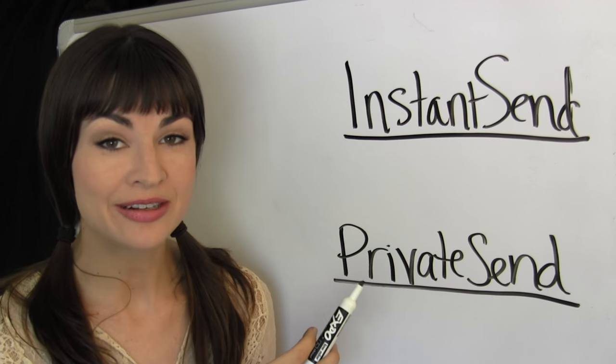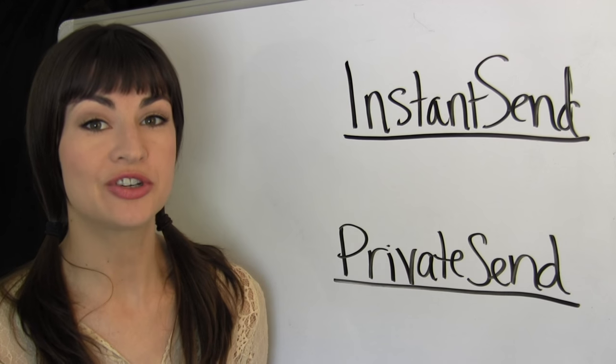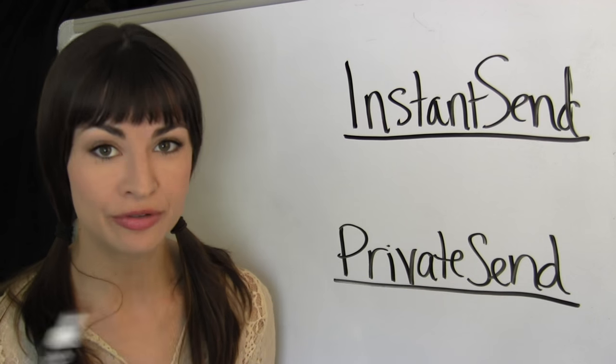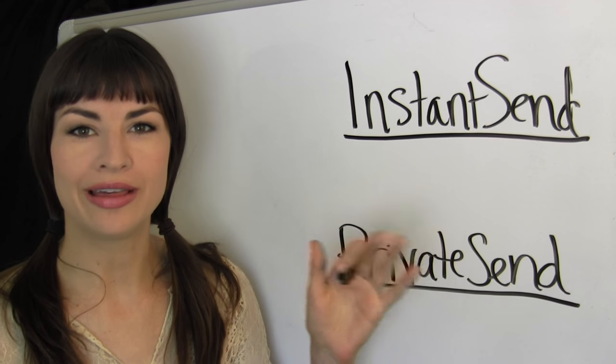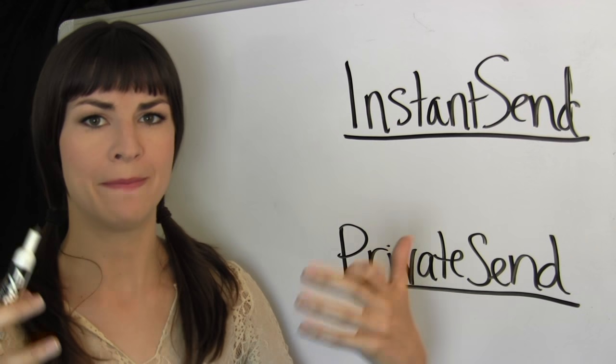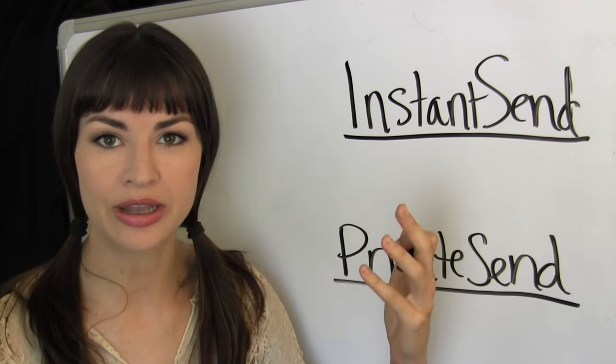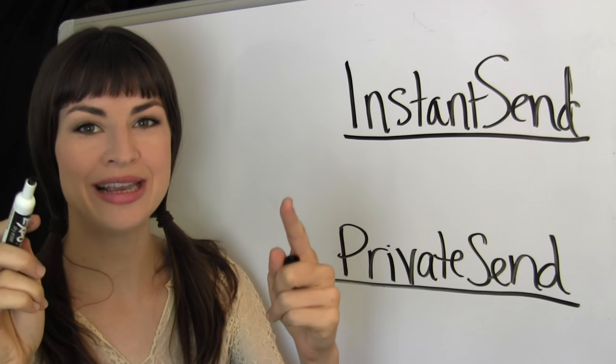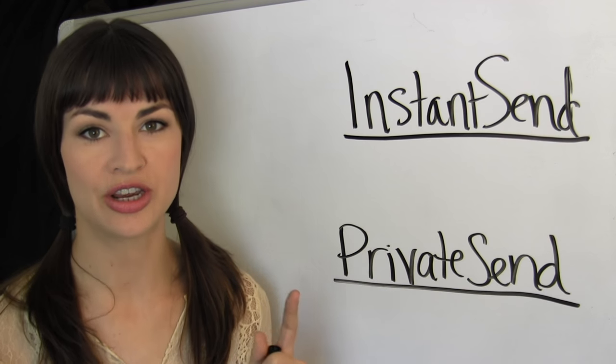Instant send and private send are two functionalities which set Dash apart from every other blockchain. And to understand what they do and why they are vitally important to the ability to offer money as a service, digital cash, we've got to go back to the basics you now know about how blockchains work.